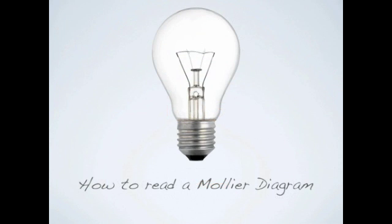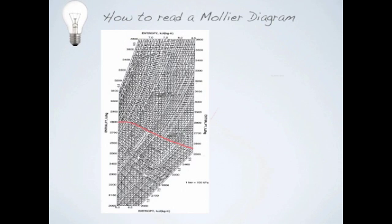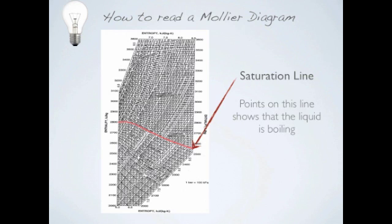So now, we are going to teach you how to read the Mollier diagram. But first, you have to get familiar with various lines on the diagram. Saturation line: points situated on this line show that the liquid is boiling.